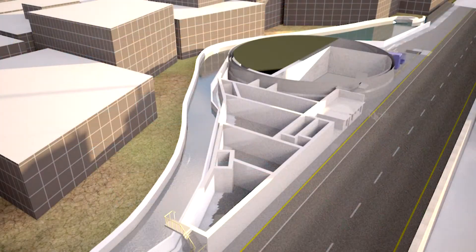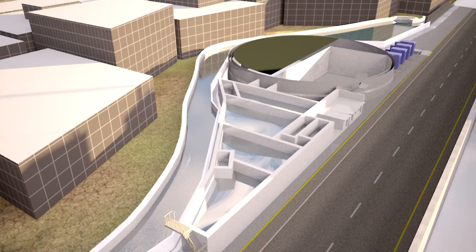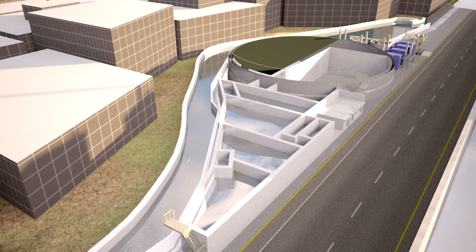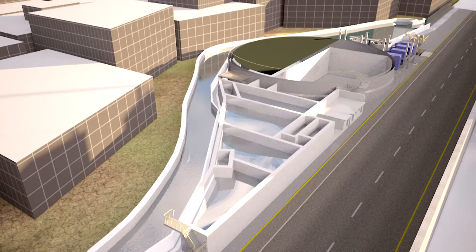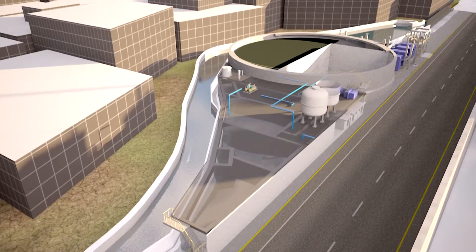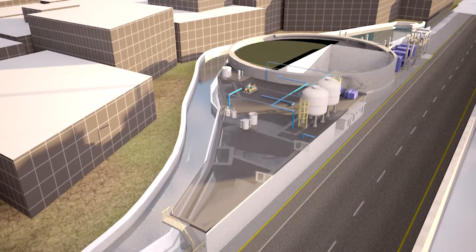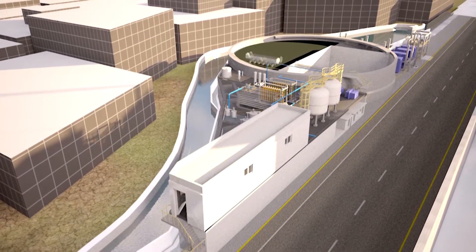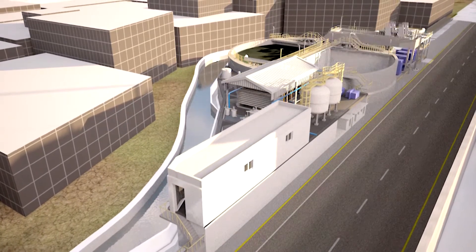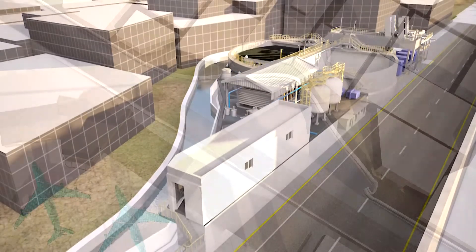AquaTech chose to go vertical and maneuvered the chlorine contact, feed, and permeate tanks into the remaining space at the base level, while installing the filters, UF system, and RO system on top of the tanks and feed pump sump.